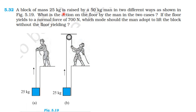A block of mass 25 kg is raised by a 50 kg man in two different ways as shown in the figure. What is the action on the floor by the man in the two cases if the floor yields to a normal force of 700 N? Which mode should the man adopt to lift the block without the floor yielding?